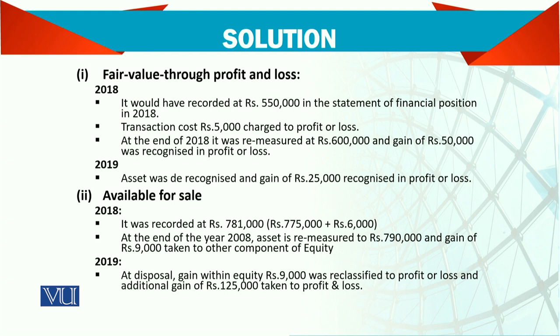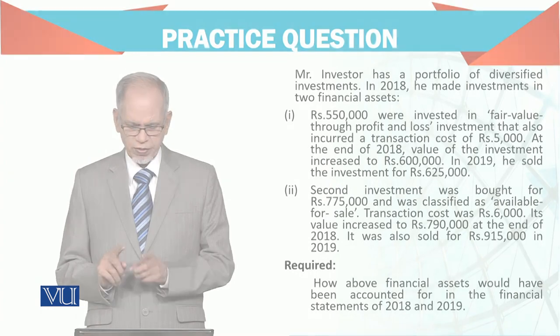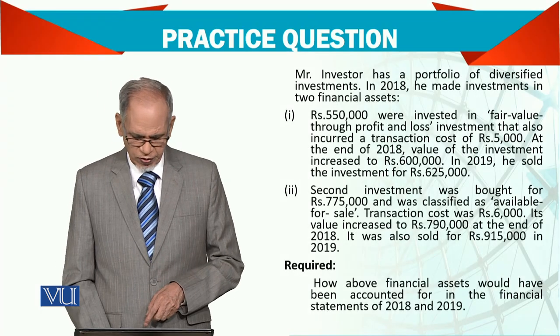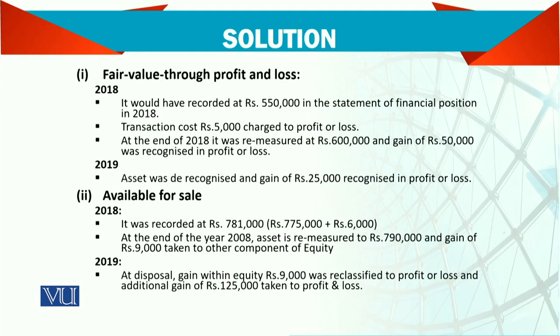When you dispose of the available for sale investment, let's look at the figures: the carrying value was 775,000, then remeasured to 790,000, and now sold at 915,000. The difference between 790,000 and 915,000 is 125,000. At disposal, the previously recognized OCI gain of 9,000 is reclassified out of equity, and both the 9,000 and the 125,000 go to the profit and loss account.